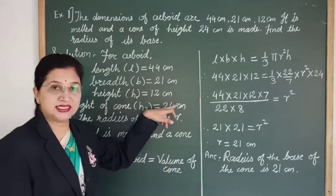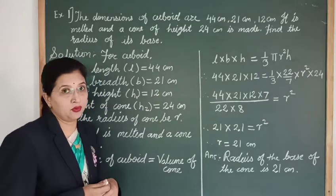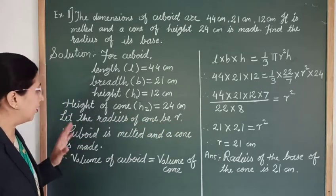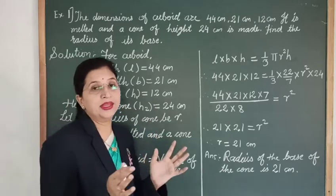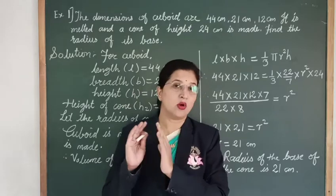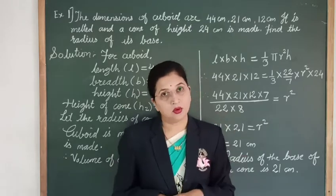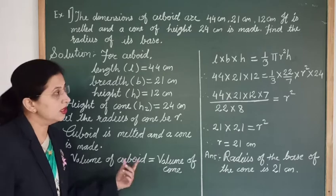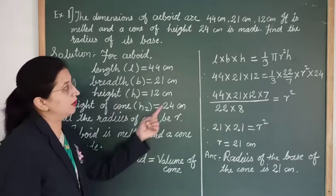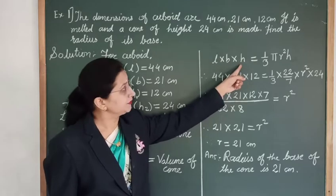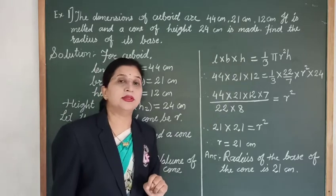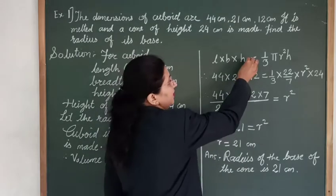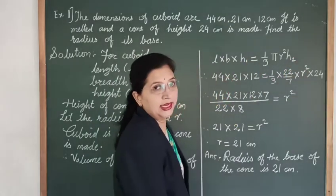These values are in the same units. We need to find the radius of the cone, so let the radius of cone be R. Since the cuboid is melted into the cone, the volume of cuboid equals the volume of cone. Volume of cuboid = L × B × H1, and volume of cone = (1/3)πR²H2.